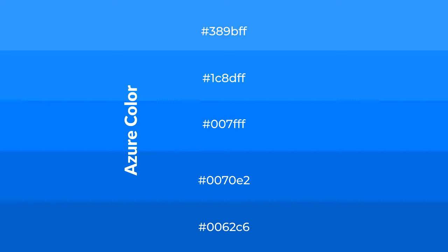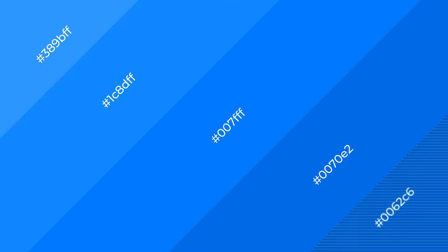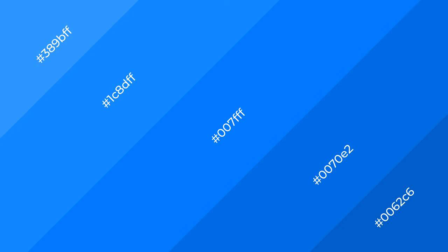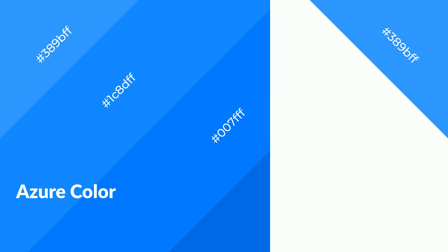To generate shades of a color, we add black to the color. It is used in patterns, 3D effects, and layers. Shades create depth and drama. Azure is a cool color and it emits calming, serene, soothing, refreshing, spacious, and relaxed emotions.